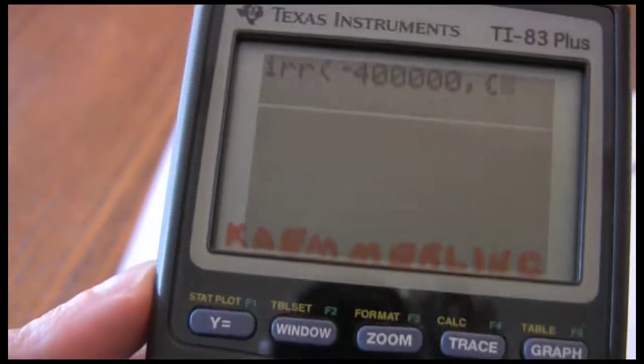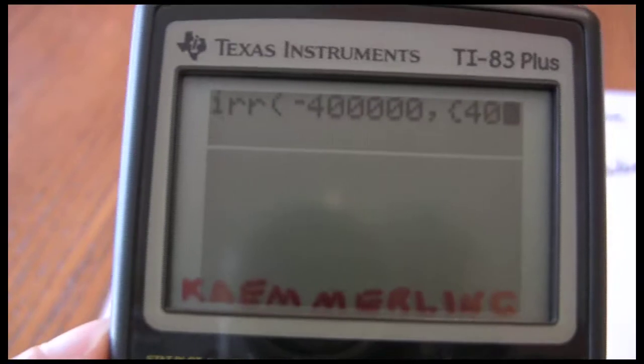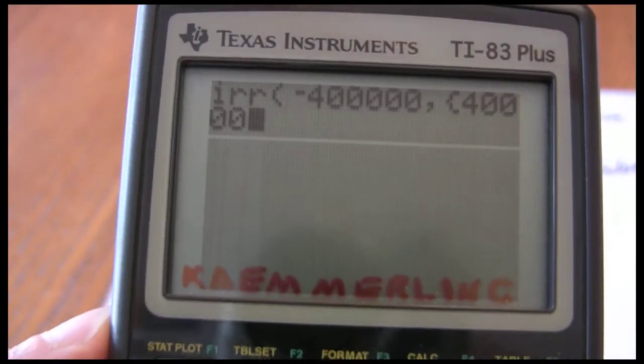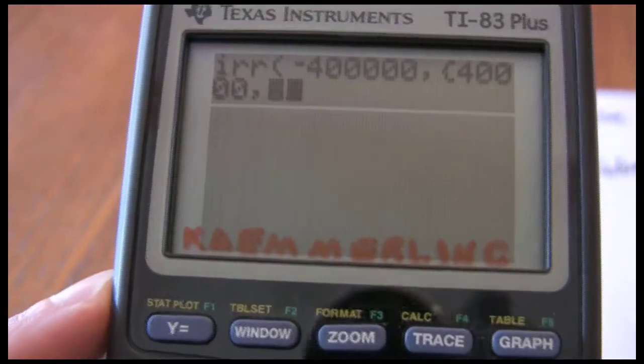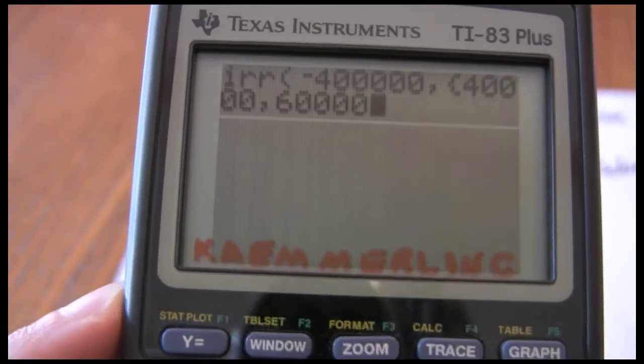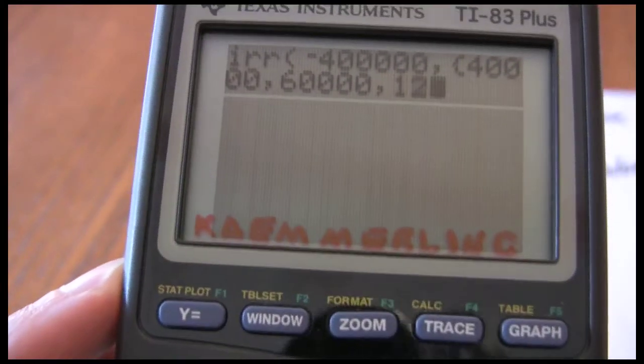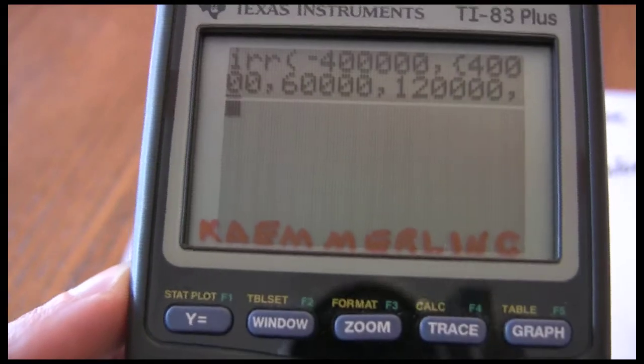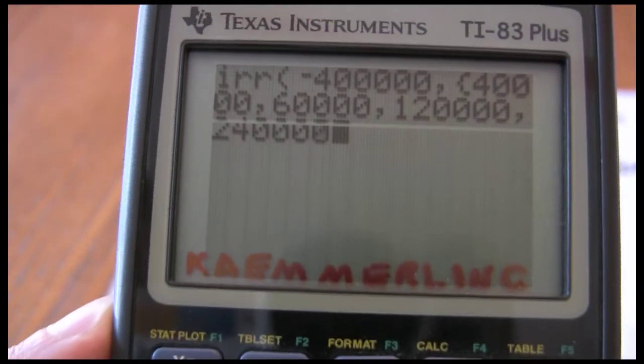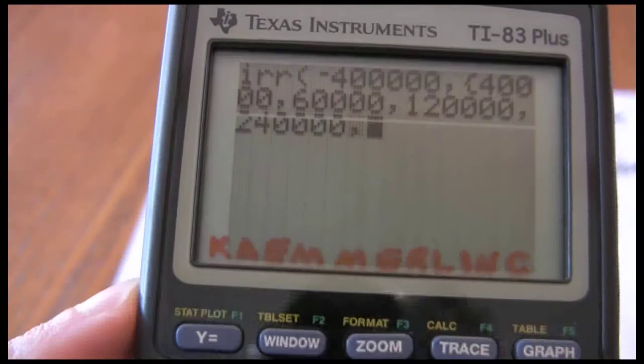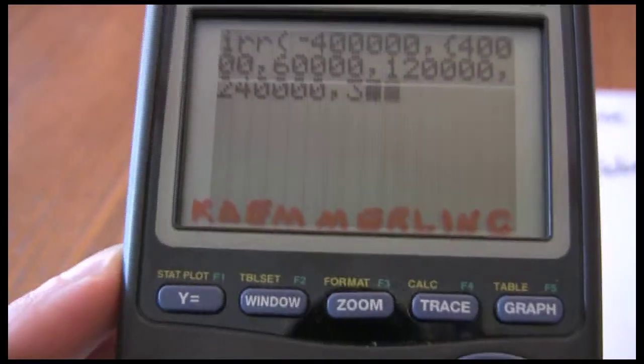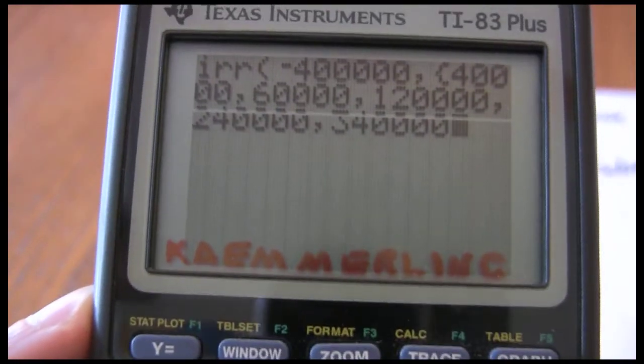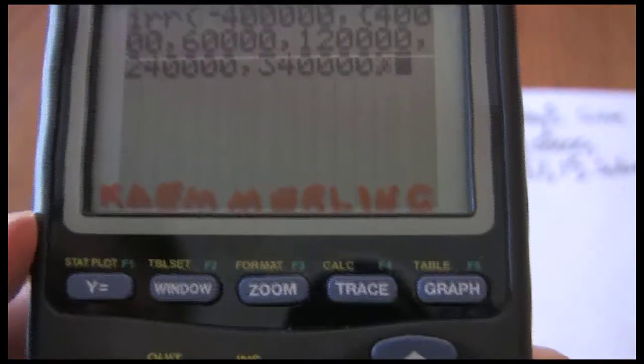Squiggly bracket. 40,000, 60,000, 120,000, 240,000, and the last cash flow in the sequence, 340,000. Now my sequences are entered.